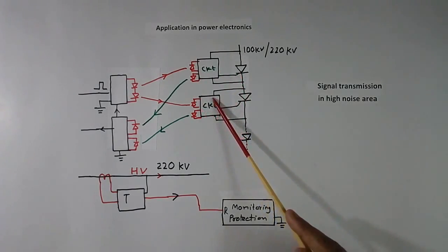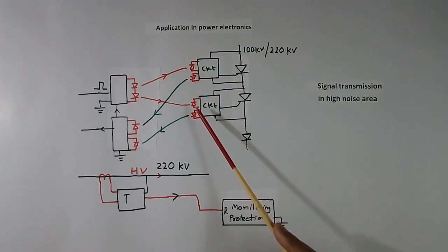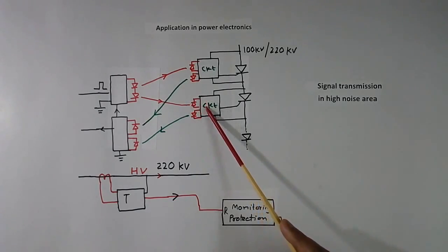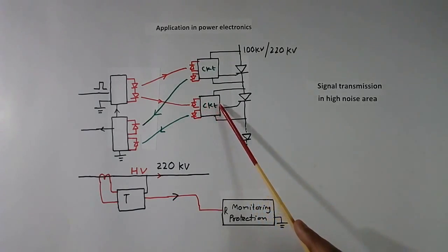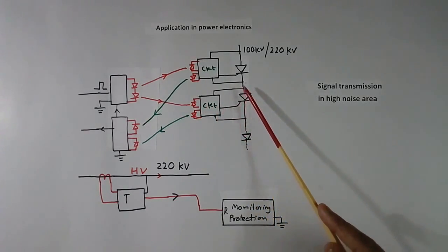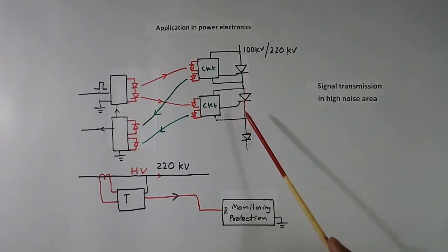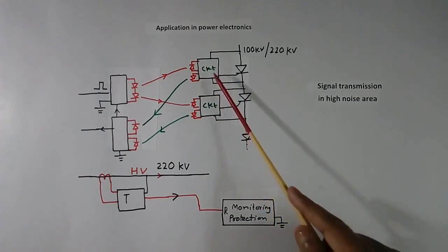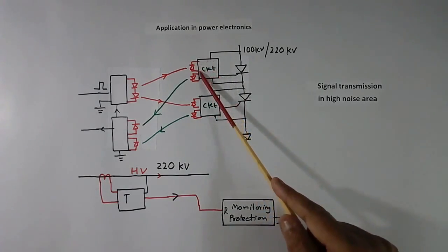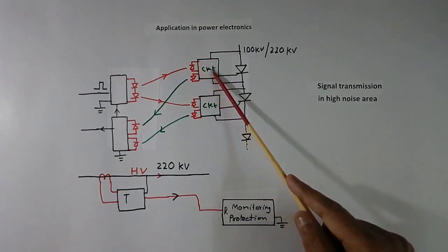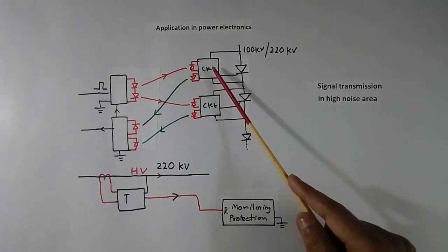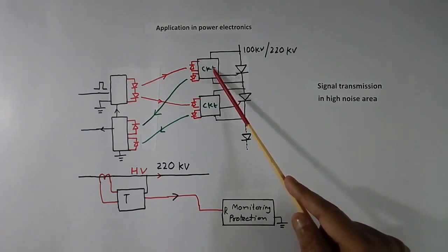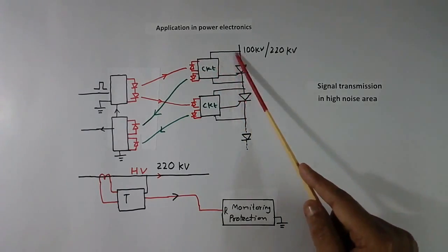Similarly, this circuit also converts the optical signal into an electrical signal and triggers this thyristor. If there are 3 thyristors, there will be 3 such circuits. This circuit does not require any external power — it draws power from the line itself.